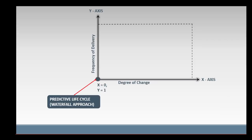Predictive life cycle or waterfall approach is at the point on the graph where the X-axis and the Y-axis intersect. At this point, the degree of change is zero and the frequency of delivery is one or single big bang delivery.